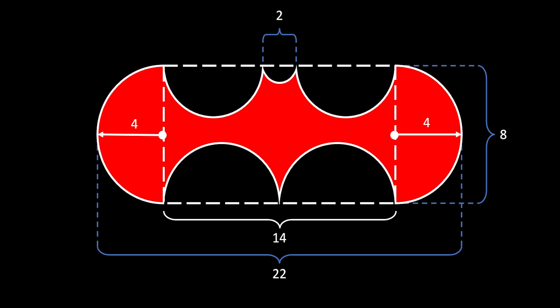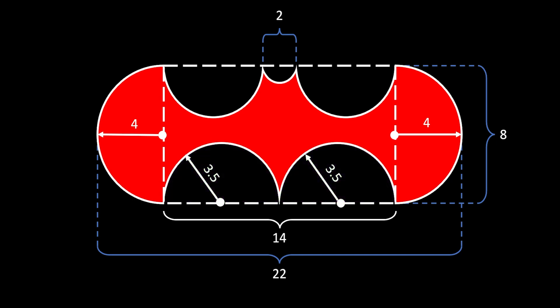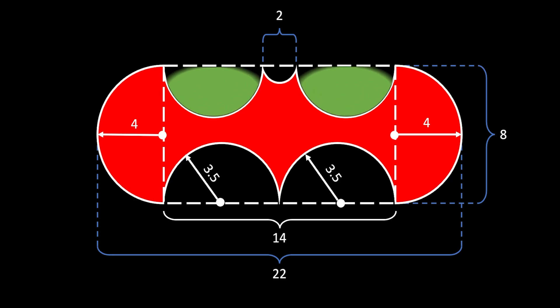Now let's find the dimensions for the semicircles inside the rectangle. First, we look at the two violet semicircles — they are also identical. Since the overall length of the rectangle is 14, the diameter of those two must be 14 divided by 2, which is 7. Since the diameter is 7, the radius must be equal to 3.5.